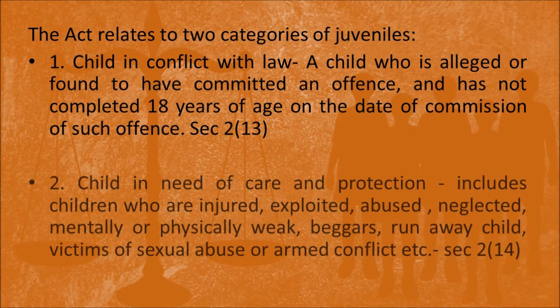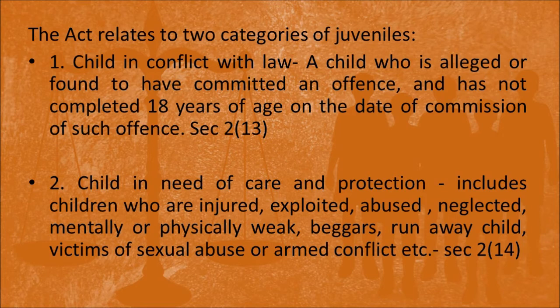A child in conflict with law is a child who is alleged or found to have committed any offence and has not completed 18 years of age on the date of commission of the offence. Whereas a child in need of care and protection includes all children who are victimized — they are injured or exploited, abused, neglected, mentally or physically weak, begging, runaway children, or victims of sexual abuse or armed conflicts. So child in need of care and protection includes all children who are victims of circumstances, whereas child in conflict with law includes children involved in offences or anti-social behaviour.